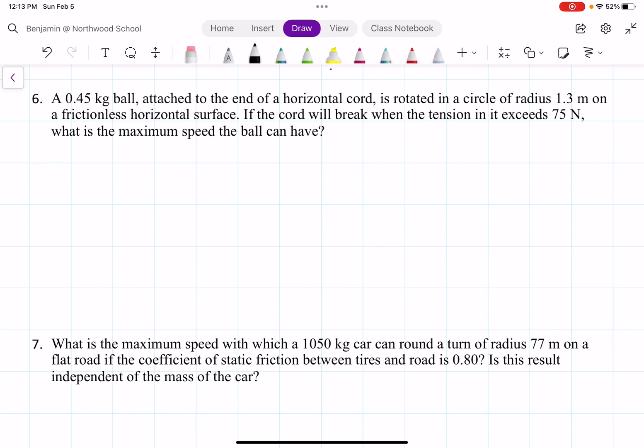All right, so we have to write down what we know. We know the mass is 0.45 kilograms. We know that the radius is 1.3 meters, and we know that the tension is 75 newtons.